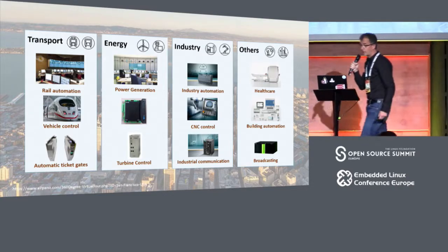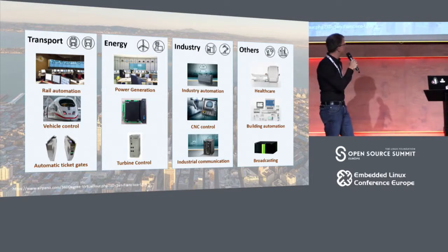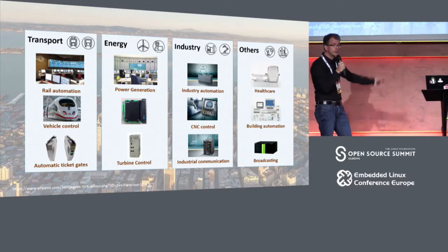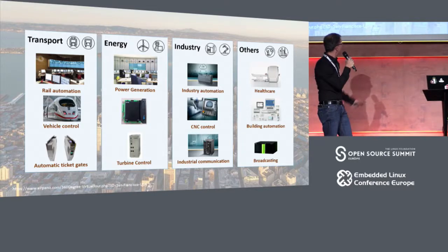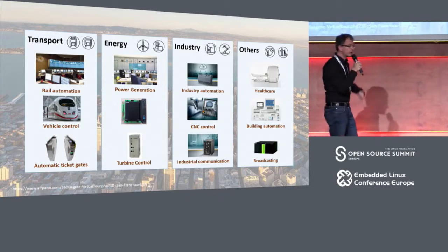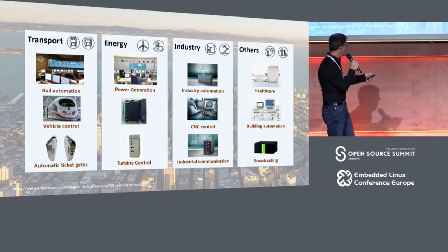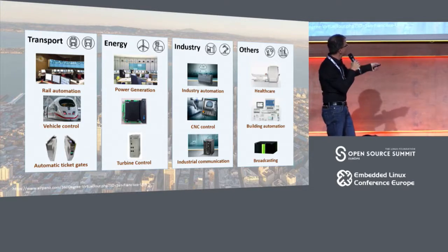Starting from left to right, we have all the transportation systems doing track controls, controlling the vehicles up to ticket gates. We have energy systems, energy distribution, power generation, turbine control. We have a lot of systems in the area of industry automation, controlling all the production lines in car manufacturers, for example. Here you see the CNC control machines, which are used at Foxconn for doing the housing for iPhones and other mobile phones. And communication devices, healthcare products, building automation, and also broadcasting devices.